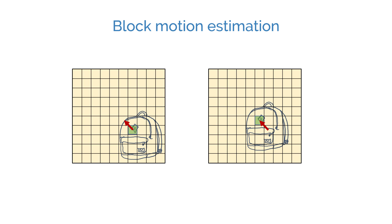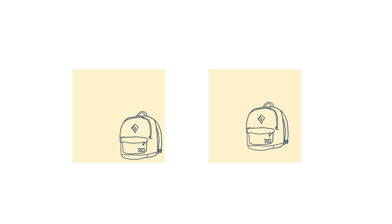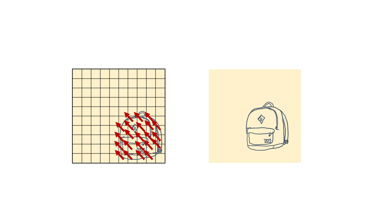How does this help with compression? Well, instead of saving every frame, we can save a reference frame and the motion vectors for the blocks. The motion vectors tell us how we should move the blocks to closely match the next frames. This is called motion compensation.